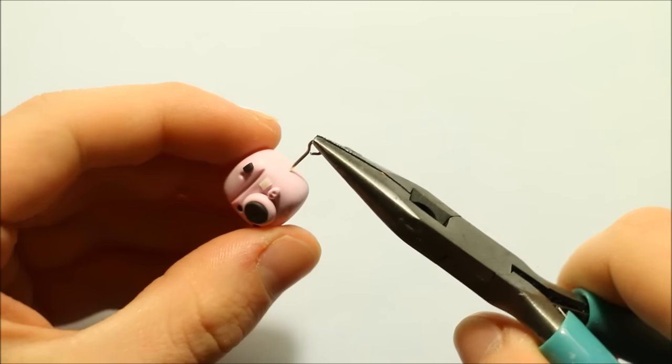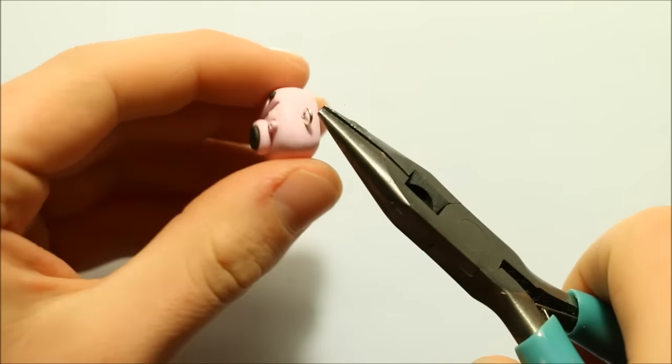Finally add an eye pin if you want to make it into a charm and then bake in the oven according to your package's instructions.